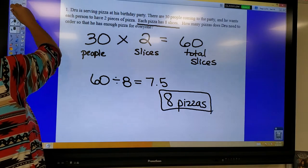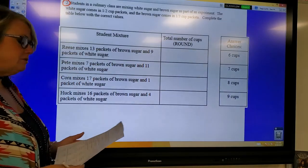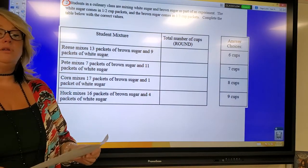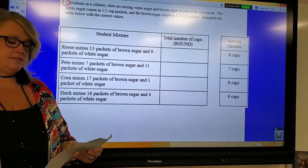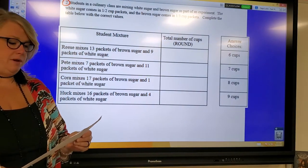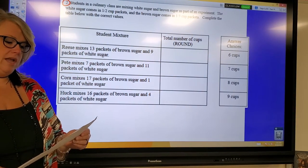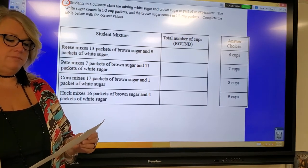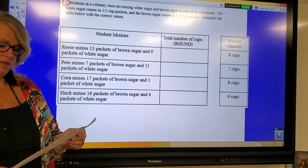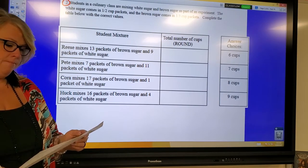All right, moving on to question number two. Question number two is actually pretty time-consuming. It says students in a culinary class are mixing white sugar and brown sugar as part of an experiment. The white sugar comes in one-half cup packets, and the brown sugar comes in one-third cup packets. Complete the table below with the correct values.